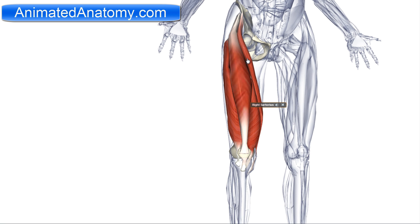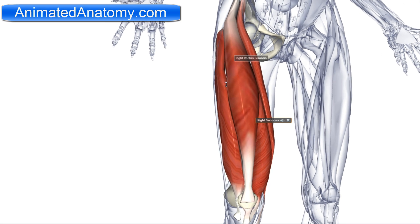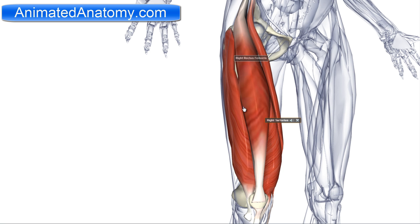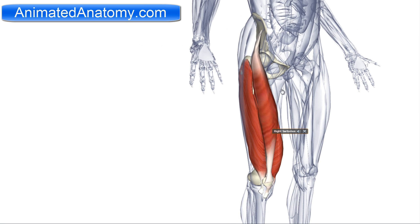Here was the sartorius muscle — this oblique muscle. But right next to it we have one very big muscle called the quadriceps femoris. The quadriceps femoris muscle consists of several parts. Let's start with this one over here: the rectus femoris.